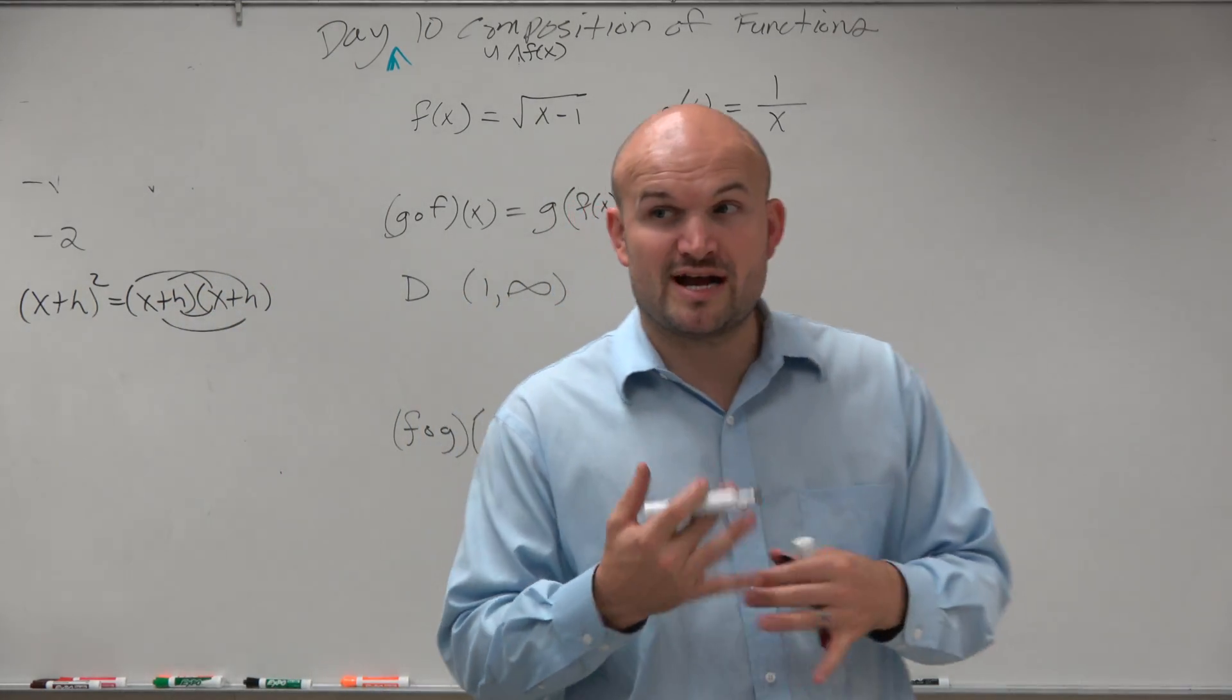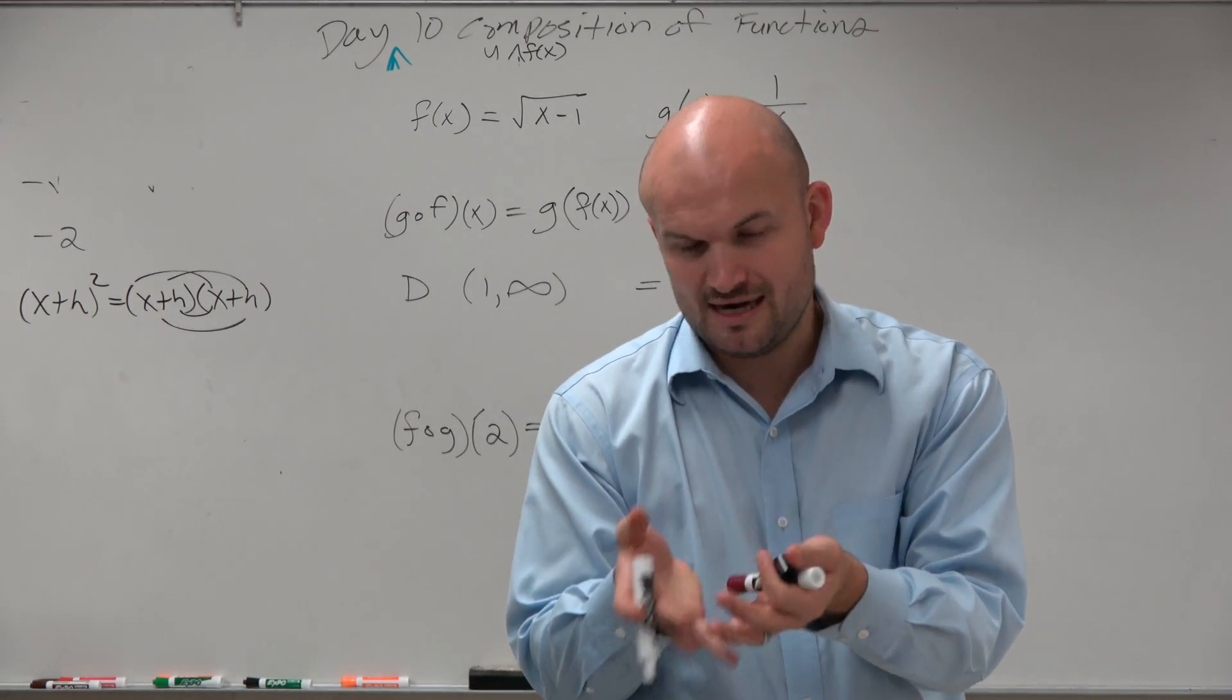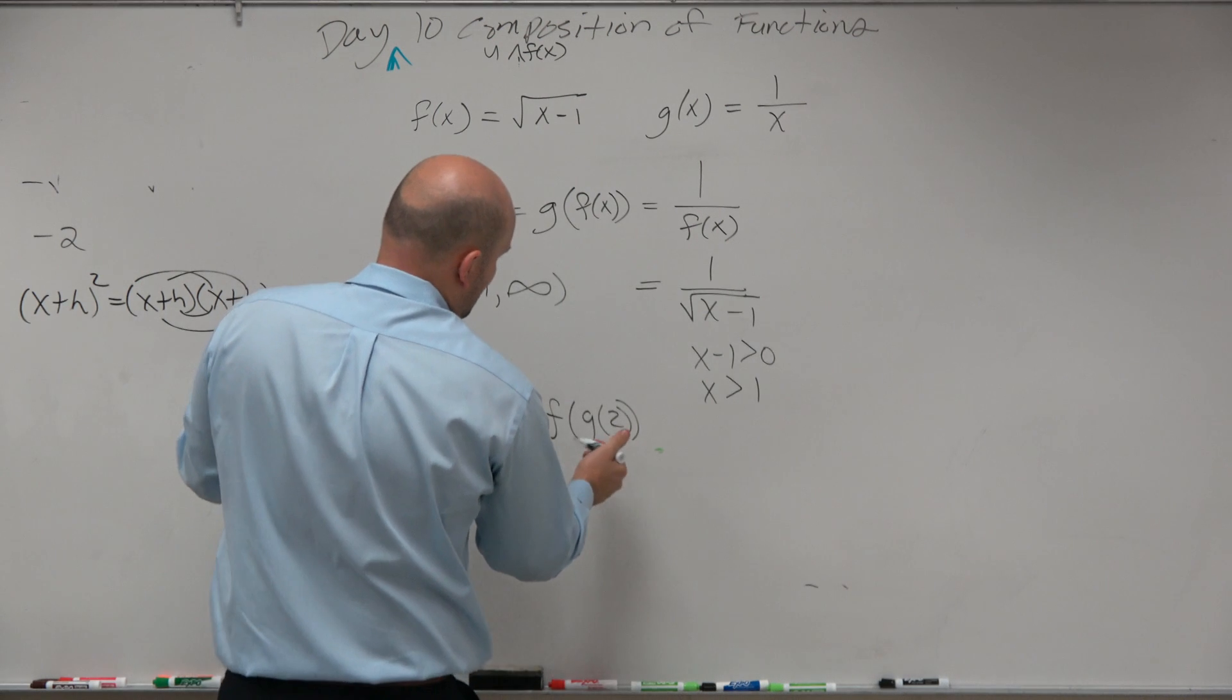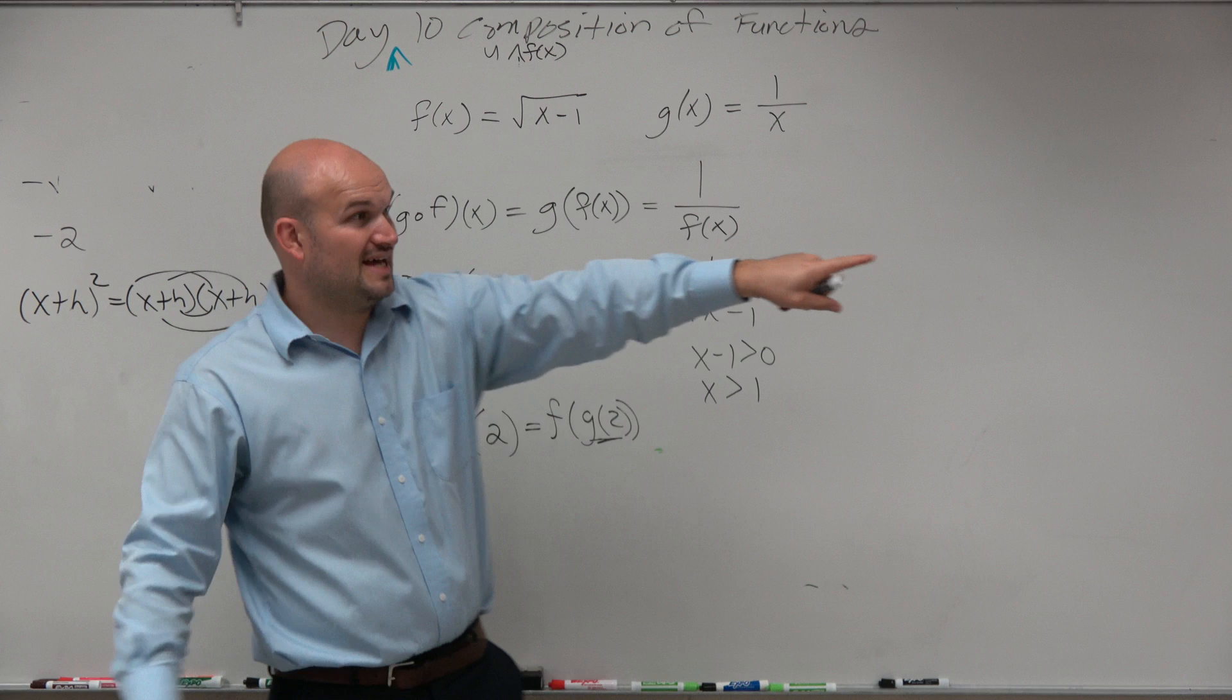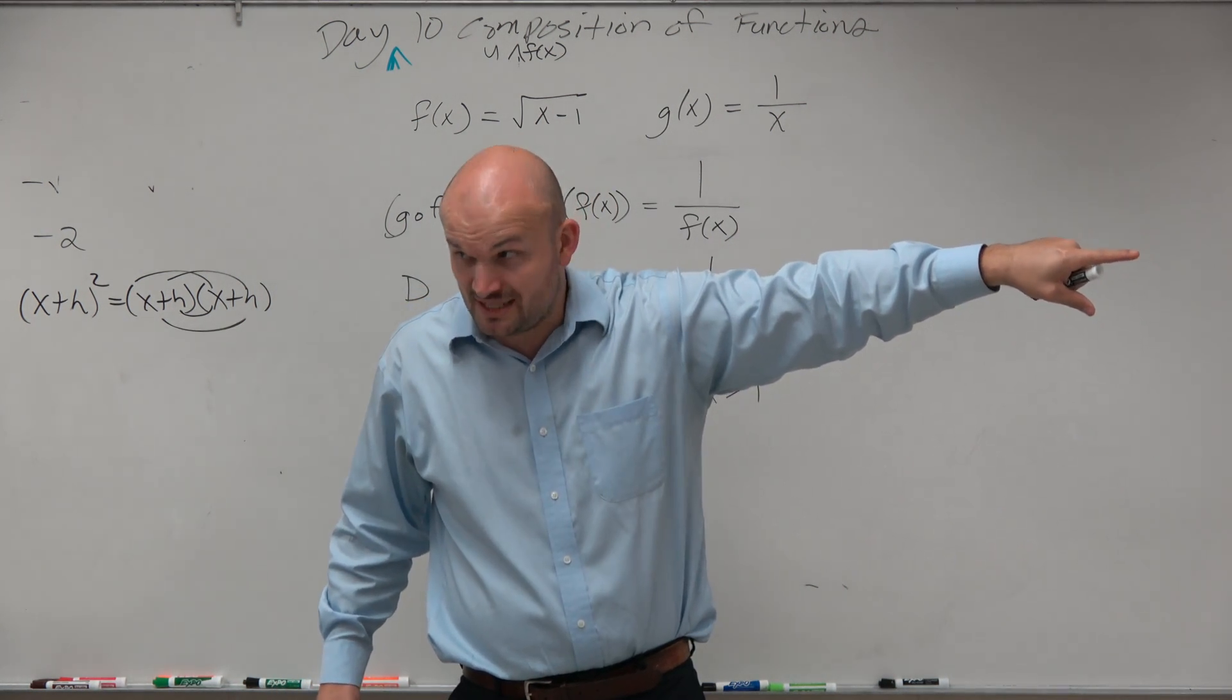Now, when you have a problem like this, we're actually trying to evaluate the composition. To me, this is a little bit easier to do than having to deal with the domain because let's just look at this like order of operations. The inside function is g of 2. That's easy, right? Look at f of x, f of 3. That was the easiest thing you guys have done all day, correct?